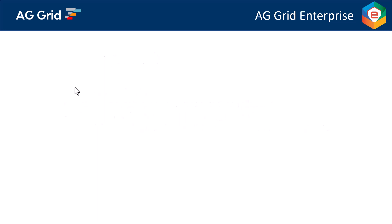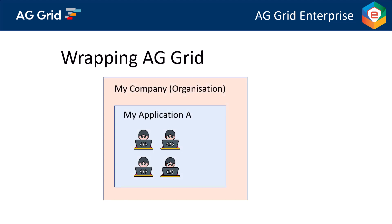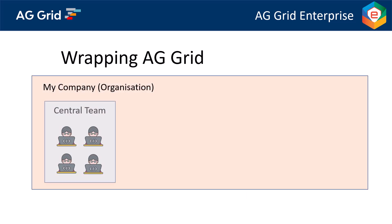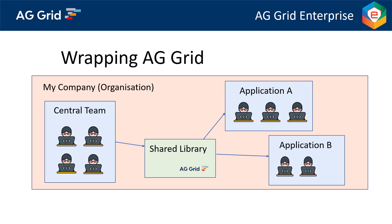I want to finish up on talking about wrapping AG Grid. All JavaScript developers on a project need to be covered by a license. It is not permissible to have just one developer work with AG Grid and only license that one developer — you will need to license all JavaScript developers on your project, not just ones working directly with AG Grid. Similarly, if you have a frameworks team providing AG Grid as part of an internal framework or library that is then consumed by other projects, then all JavaScript developers on those other projects also need to be licensed.